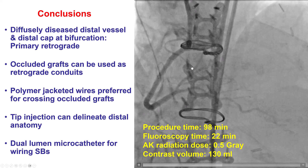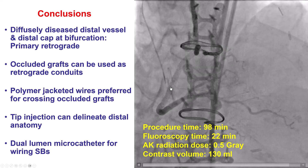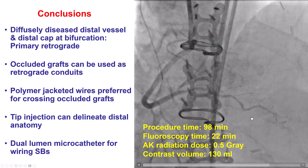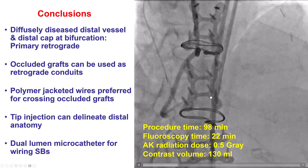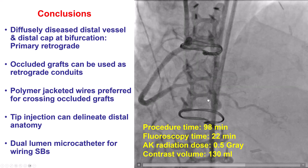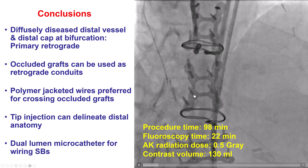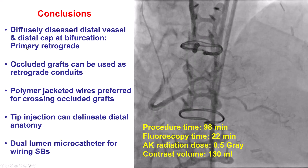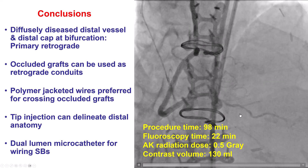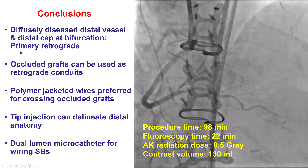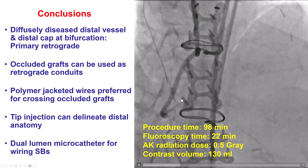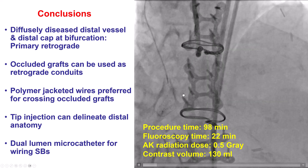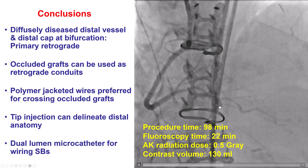Multiple lessons from this case. The first: for a diffusely diseased distal vessel — even immediately after stenting the vessel grew, but it was very small on the diagnostic angiogram, likely because of underperfusion — in such cases where the distal vessel is very small and diffusely diseased, going with a primary retrograde approach is advantageous. If we go antegrade and end up extraplaque or subintimal, re-entry is quite challenging.